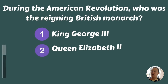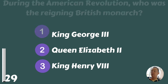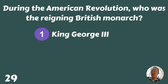During the American Revolution, who was the reigning British monarch — King George the 3rd, Queen Elizabeth the 2nd, or King Henry the 8th? King George the 3rd.